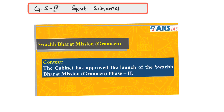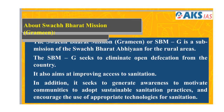The government is launching the Swachh Bharat Mission Grameen Phase 2. The cabinet has approved this phase two of Swachh Bharat Mission for Grameen, which is a sub-mission within the Swachh Bharat Abhiyan for rural areas. This Swachh Bharat Mission Grameen seeks to eliminate open defecation from the country.